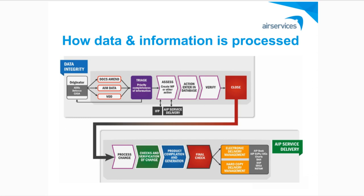Once we reach the respective cut-off dates, we run a process called Promoting the Data, which collates all the data, including the changes made up to that point, and delivers it to our product production systems. The service delivery team and charting teams then start a second round of checks before the products are produced, compiled, and generated. One final quality check is completed and the products are distributed.